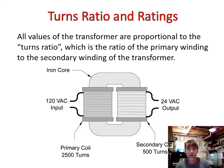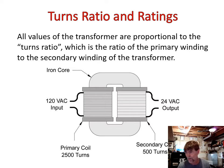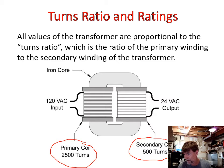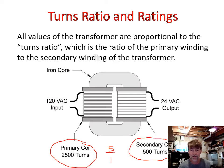All values of the transformer are proportional to the turns ratio — the turns ratio determines the amount that the voltage and current are going to change. For example, the number of turns in the primary coil is 2,500 and the number of turns in the secondary coil is 500. So the turns ratio is 2,500 over 500, which we reduce to 5 to 1. For every 5 turns in the primary coil, there is 1 turn in the secondary coil — that's how we express it.